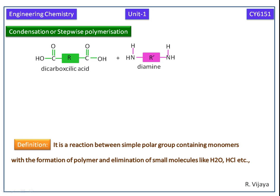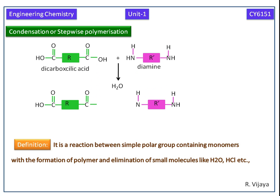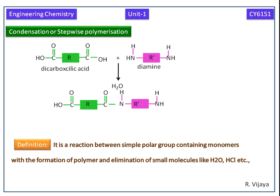Small molecules like water, HCl, etc. are eliminated. Here we eliminate a water molecule. These two products combine to give this one. The terminal amine will react with another dicarboxylic acid, and this terminal carboxylic acid group will react with another diamine group, giving us this polymeric product.